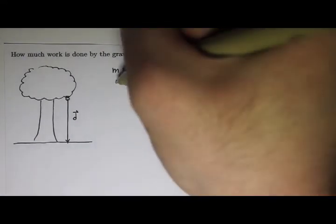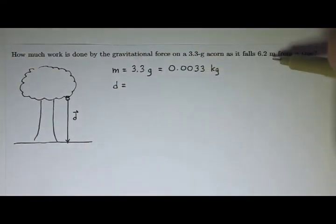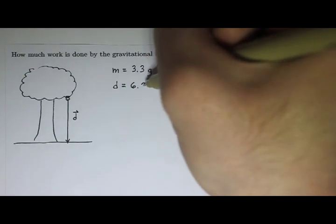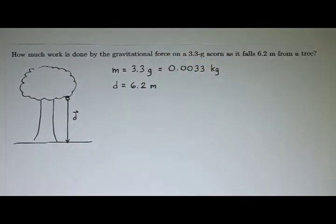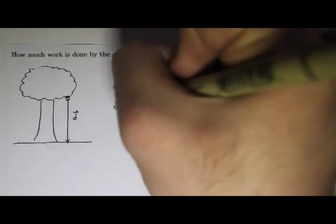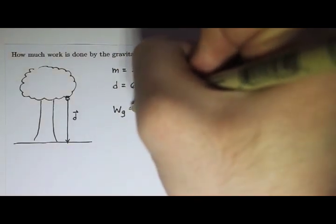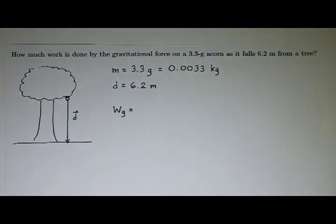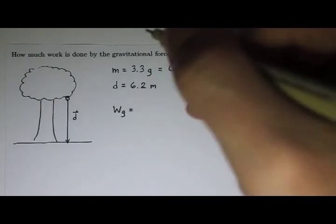And then the magnitude of the displacement here is 6.2 meters. Okay, and that's all I know given to me in the problem. And I want to know the work done by the gravitational force. Okay, so the work done by gravitational force, I'll put a little subscript g here to denote that that's the work done by the gravitational force.